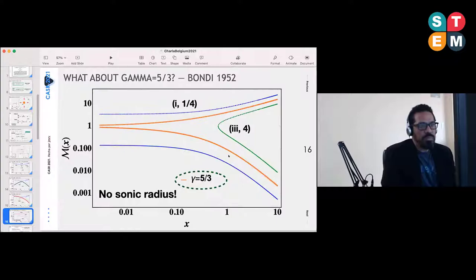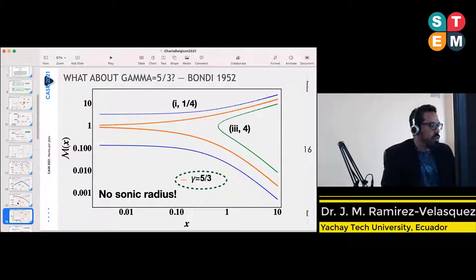One last point I want to present because I think it's important is that for the special case of this polytropic index equal to five-thirds, there is no sonic radius, so the transonic solution doesn't exist.